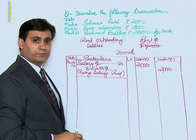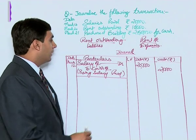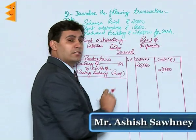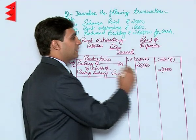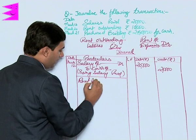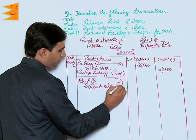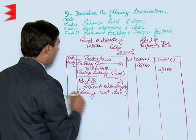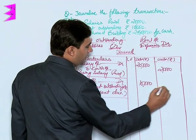The rules for liabilities: debit if liabilities increase and credit if they increase. In this case liabilities are increasing, so it should be credited. For expenses: debit if expenses increase and credit if they decrease. Here expenses are increasing, so rent account should be debited. The entry is: Rent Account debited to Rent Outstanding Account. Narration: rent due. Date: March 20th. Amount: rupees 10,000 on both debit and credit sides.